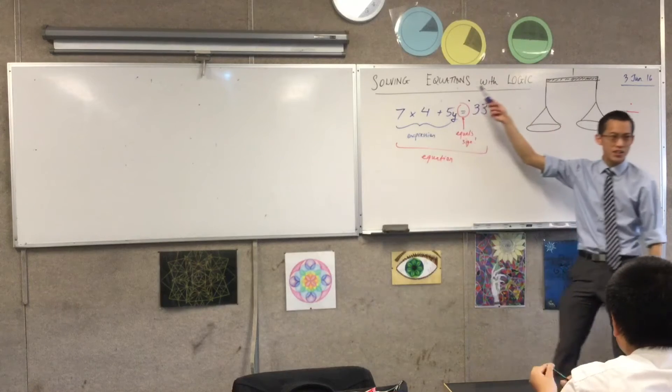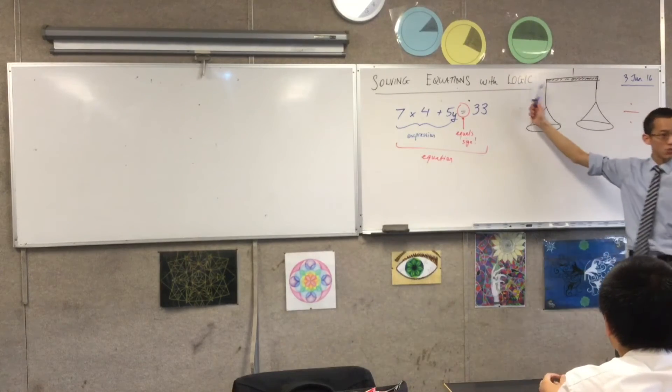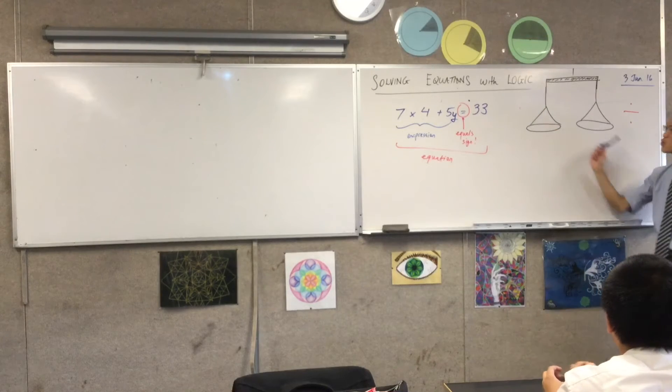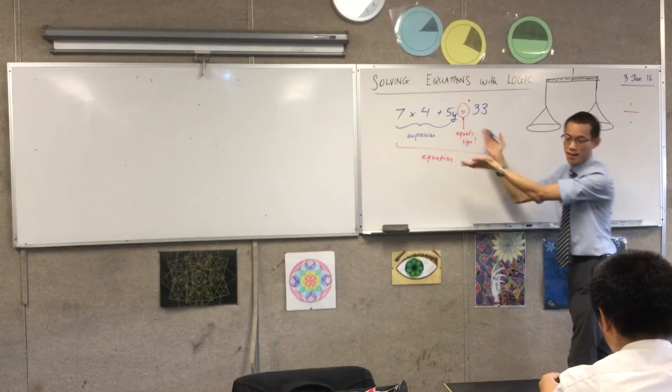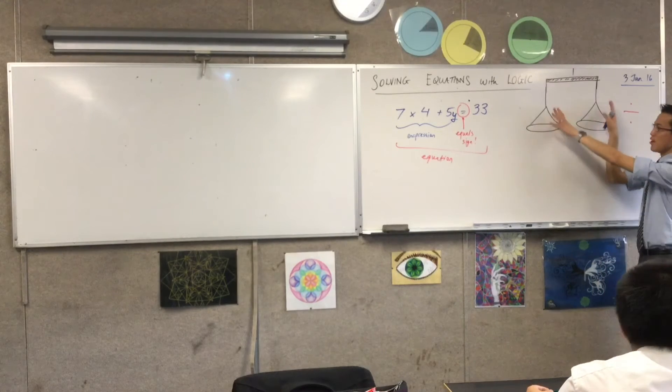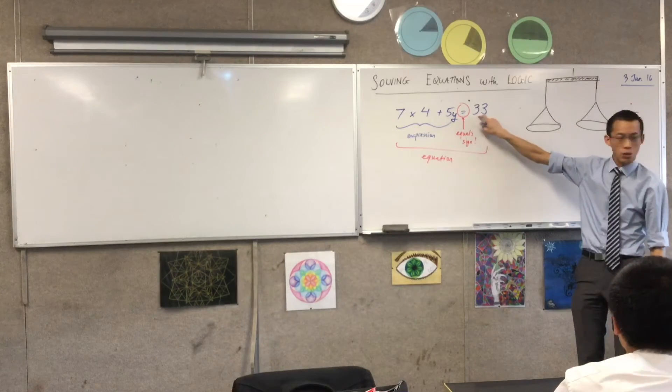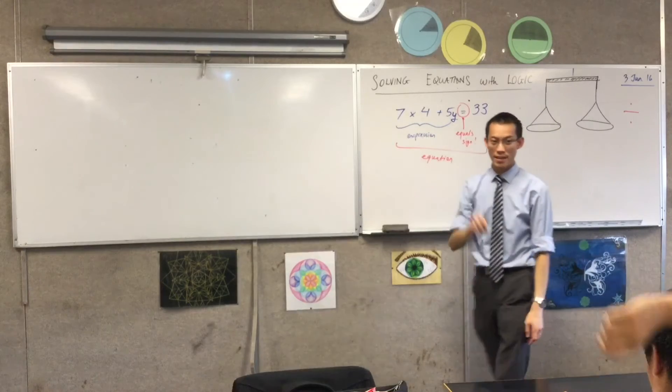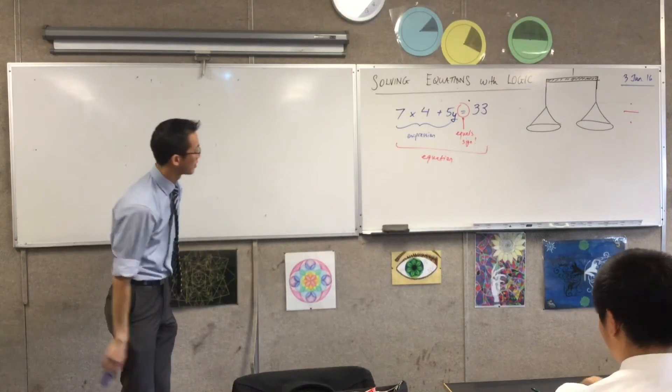So rather than solving equations by trial and error, guess and check, we're going to use logic, okay? And the key is to remember, if what you have is two things that are equal to each other, two things that exactly balance, then if they're the same, you can do things to both sides and it stays balanced. So for example, if you haven't already, would you write down this algebraic equation, and we are going to solve it with logic.